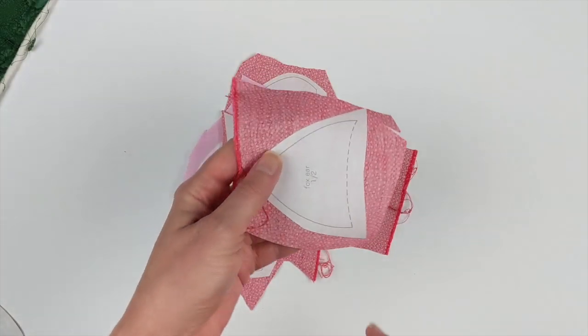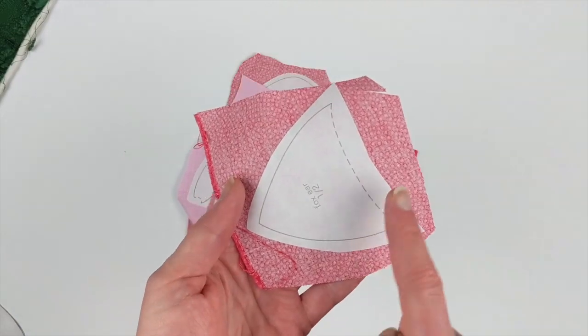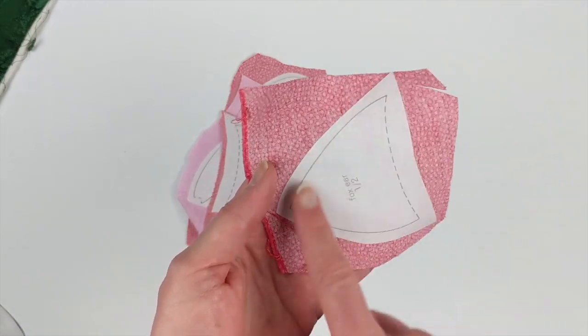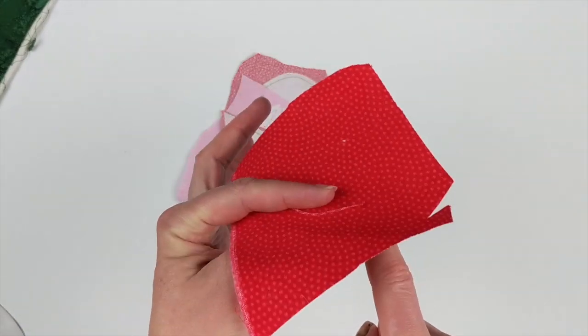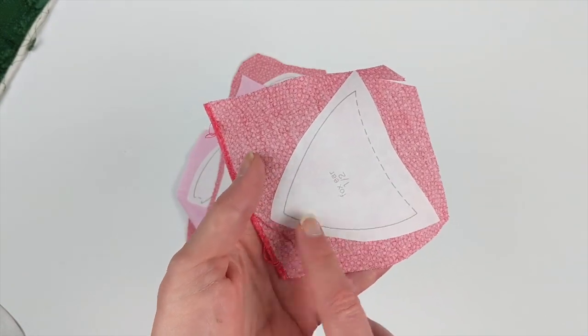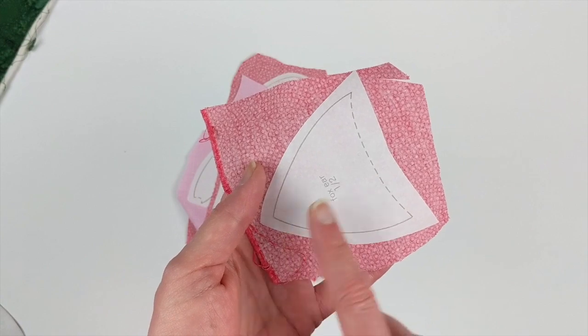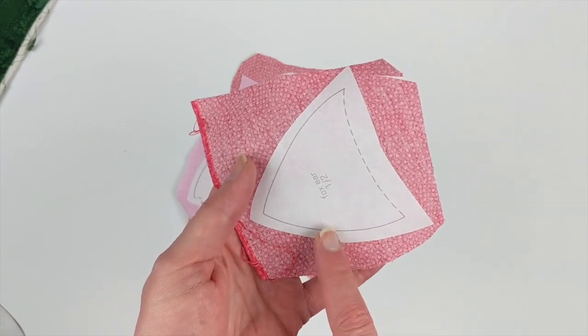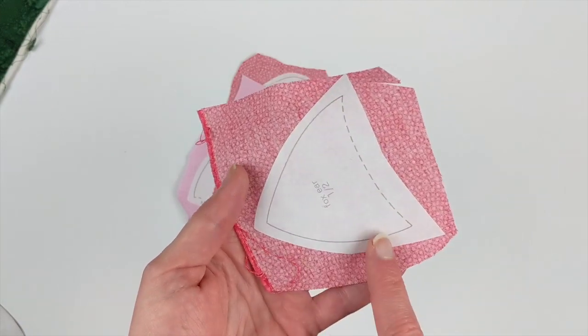Okay, the first thing that you're going to need to do is trace or print all of the pattern pieces onto the paper side of fusible backed adhesive. I use Heat and Bond Light. That's my favorite kind. I use it for all of my quilts, but use whichever fusible adhesive you like.